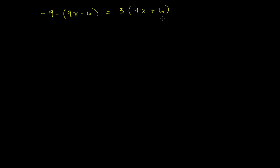A good place to start is to just get rid of these parentheses, and the best way to do that is to multiply them out. This has a negative 1 — you just see a minus here, but it's really the same thing as having a negative 1 times this quantity. And here you have a 3 times this quantity. So let's multiply it out using the distributive property.